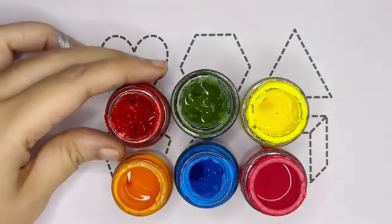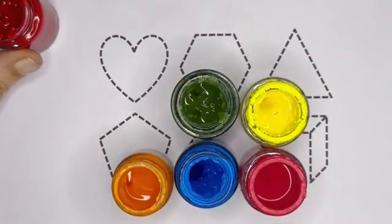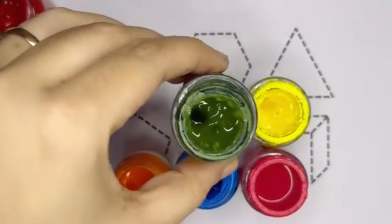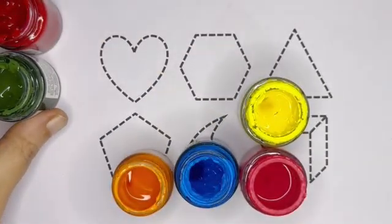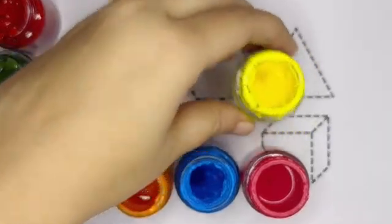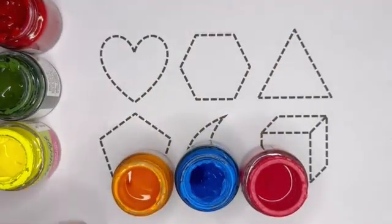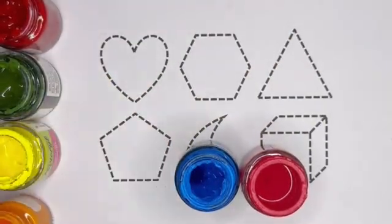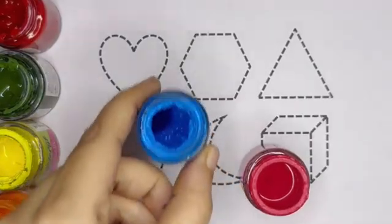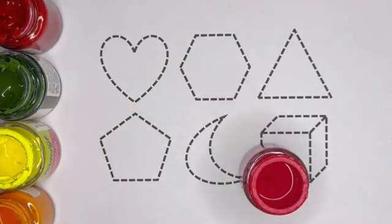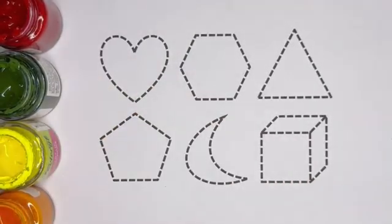These are the colors kids. This is red color, green color, yellow color, orange color, sky blue color, pink color, this is black color.